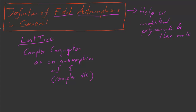Last time we talked about complex conjugation as a field automorphism. This time we are going to talk about field automorphisms more generally. We are doing this because field automorphisms will help us understand polynomials and their roots, and to get this benefit we are going to have to talk more generally than ℂ and more generally than complex conjugation.